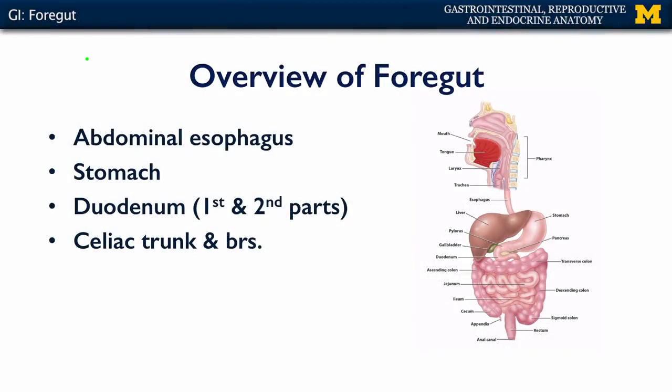Let's talk about the foregut. The foregut consists of the portions of the gut tube from the abdominal portion of the esophagus, which is obscured by the liver here, through the stomach and into the duodenum, and includes the first two parts of the duodenum. This region is supplied by the celiac trunk, which is the first major branch of the abdominal aorta and its branches.